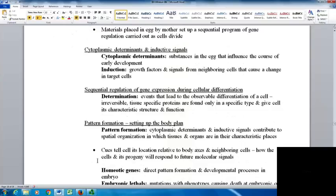Pattern formation involves cytoplasmic determinants and inductive signals contributing to the spatial organization in which tissues and organs are in their characteristic places. This is why we can all have our eyes, nose, mouth, ears, arms, legs all in the same place. These cues tell cells their location relative to body axes and neighboring cells. This way cells and their progeny respond to future molecular signals, and you can end up with all humans having relatively similar body layouts.